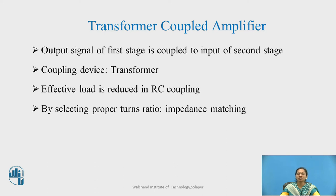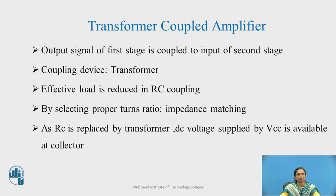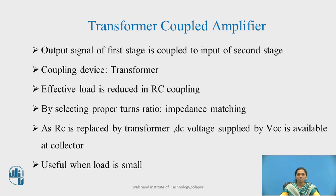By proper selection of the turns ratio of the primary and secondary windings, we achieve the advantage of impedance matching. Since RC is replaced by the transformer, the load resistance value at the collector varies — that is, the reflected load achieves the DC voltage supplied by VCC at the collector. This is particularly useful when the load value is small.